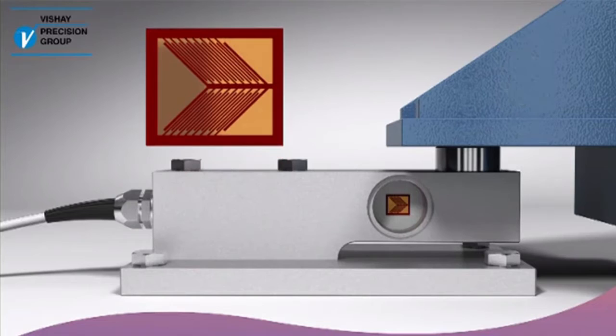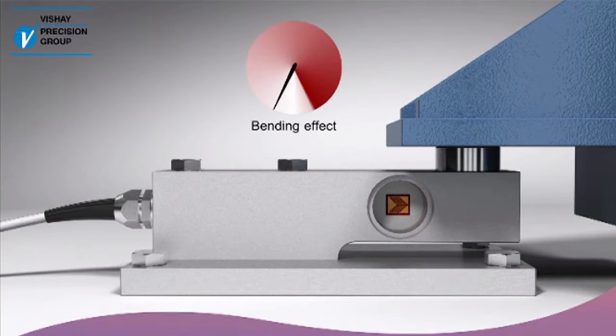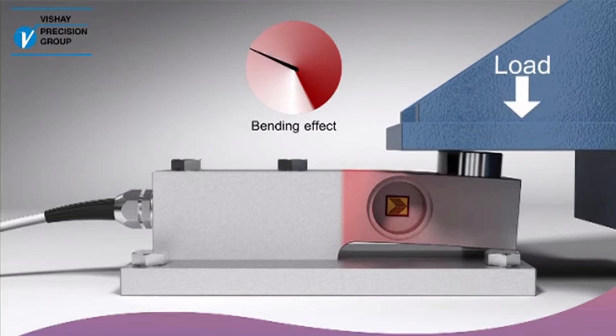In a simple shear beam, there are also bending strains present, which contribute to the output. Under laboratory conditions, the bending effects, though present, are small in comparison to the applied load and thus do not adversely affect the accuracy of the load cell.